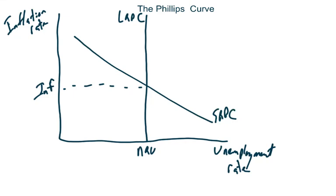Hey everybody, it's the Bald Man once again and today we are going to be talking about the Phillips Curve. Usually when we get into a new graph, I'll teach you how to label it, what the shifters are, and how that affects the curves of the graph. But this is a different kind of graph. We will go over the shifters for the LRPC and then discuss everything else, and you'll see what I mean about this being a different kind of graph.